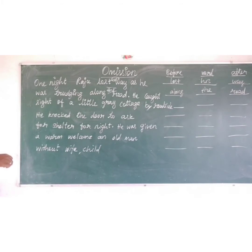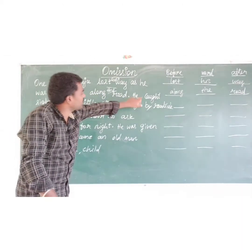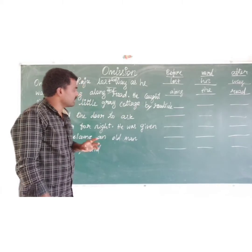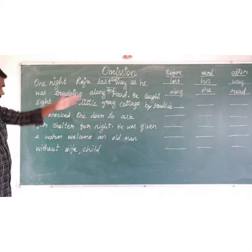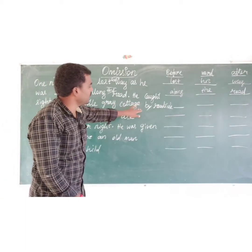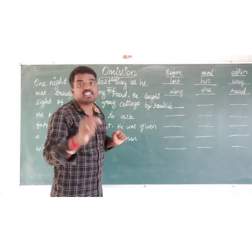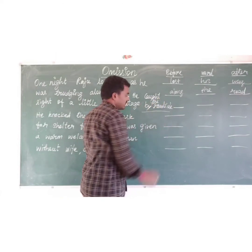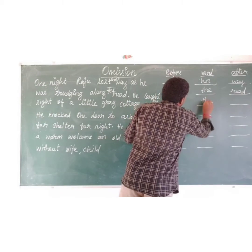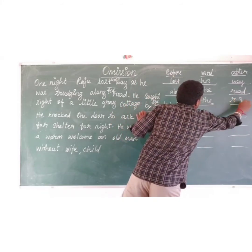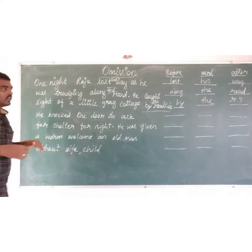Next, third line: 'He caught sight of a little grey cottage by roadside.' — 'By roadside.' Which particular roadside? So it should be 'by the roadside'. The missing word is 'the'. Before word: 'by'. After word: 'roadside'. When we are reading, we can definitely find it.